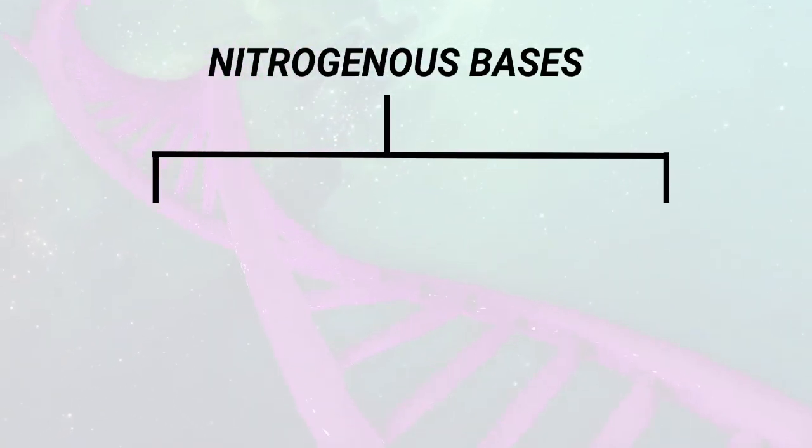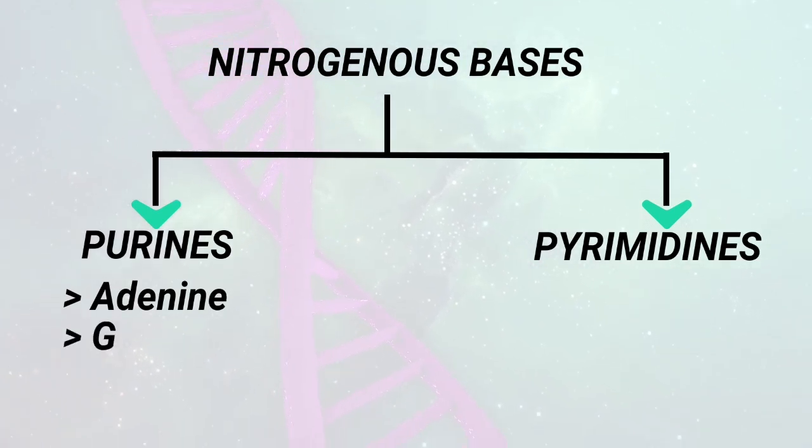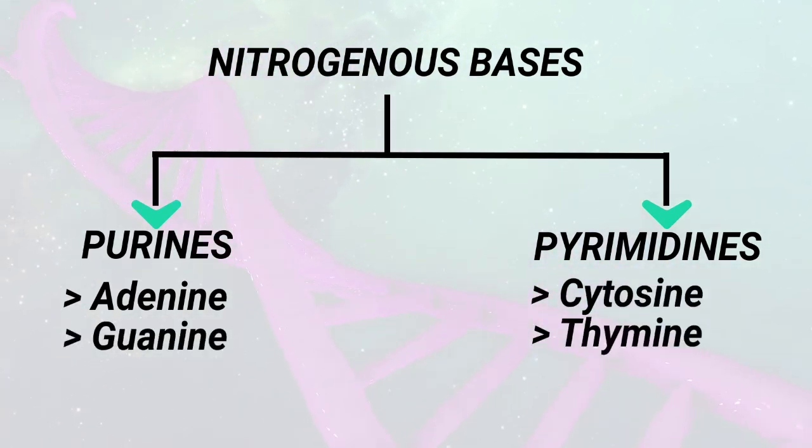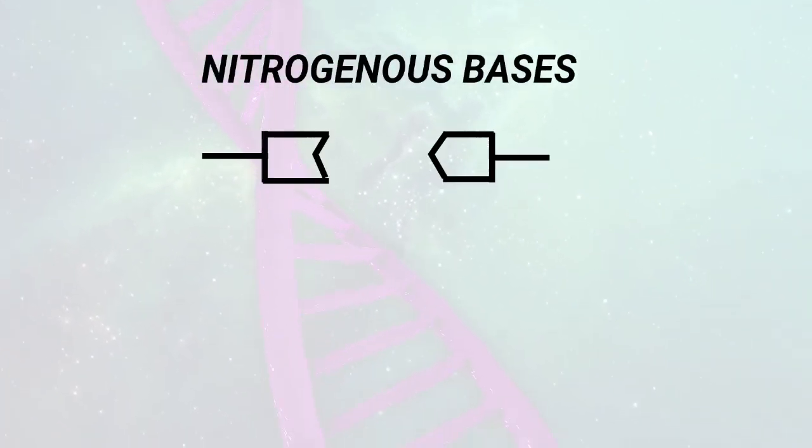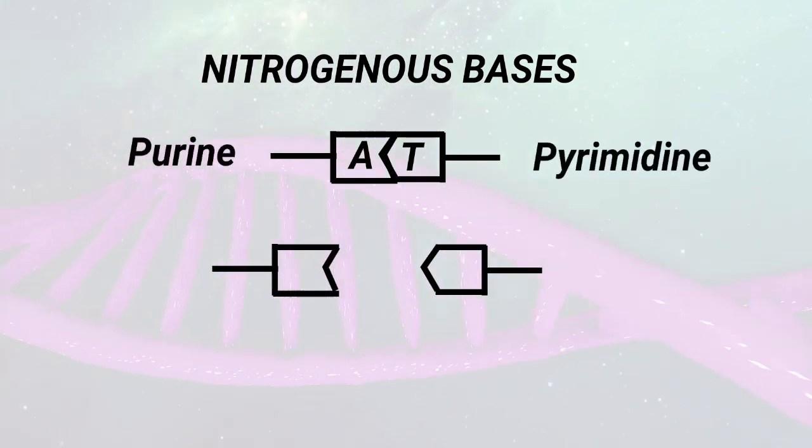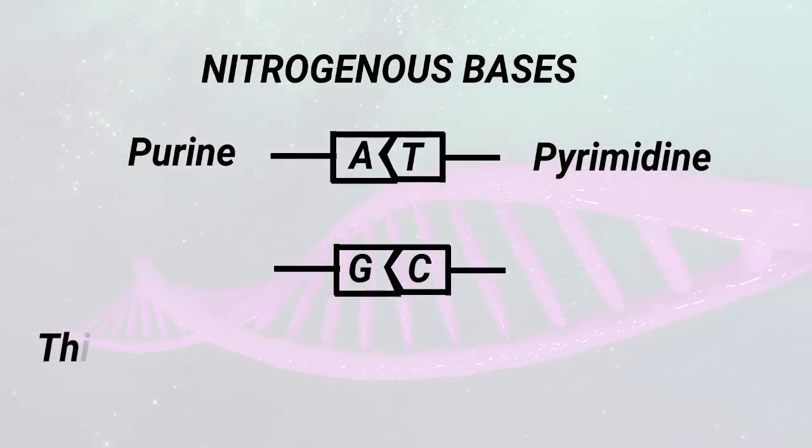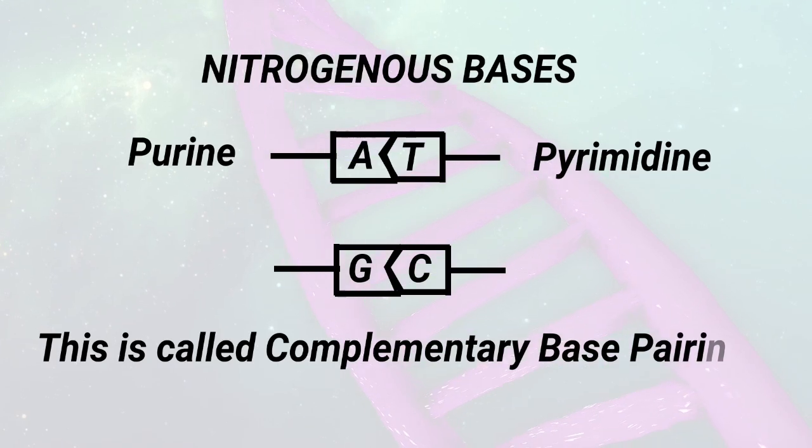The nitrogenous bases are of two types: purines and pyrimidines. Purines are adenine and guanine. Pyrimidines are cytosine, thymine, and uracil. Uracil is found in RNA. A purine base on one polynucleotide chain always pairs with a pyrimidine base on the other. Adenine pairs with thymine and guanine pairs with cytosine. This is called complementary base pairing.